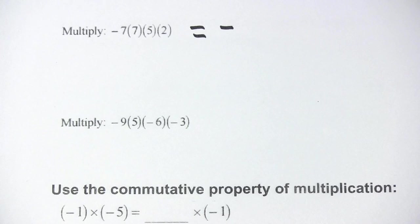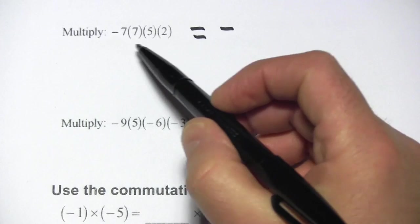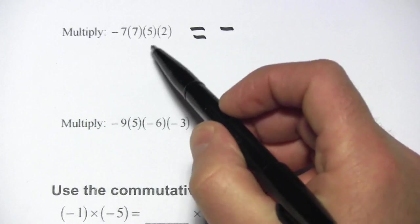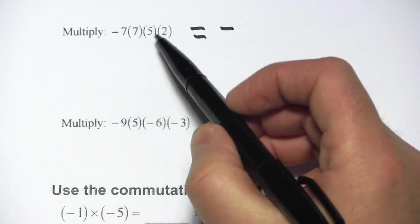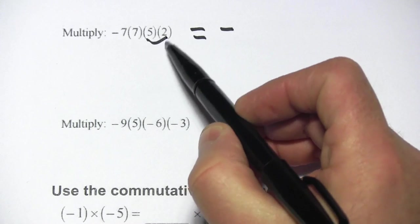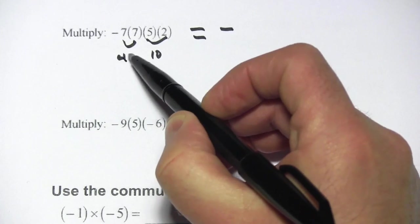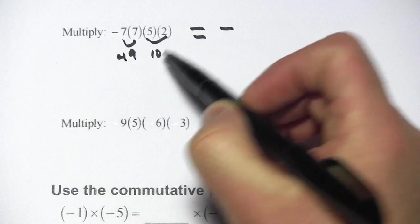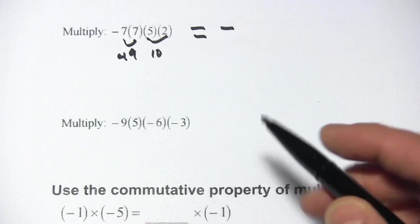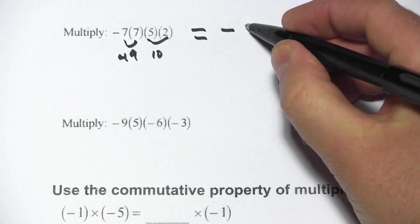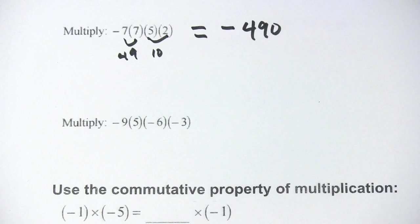We could pull out a calculator but you can probably do this in your head pretty easily. Five times two is ten, seven times seven is 49, and 49 times ten would be 490. So this whole thing is negative 490.